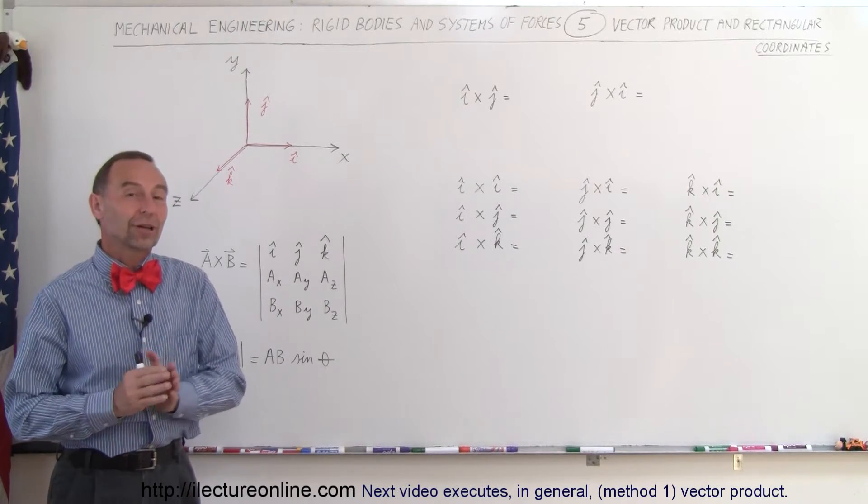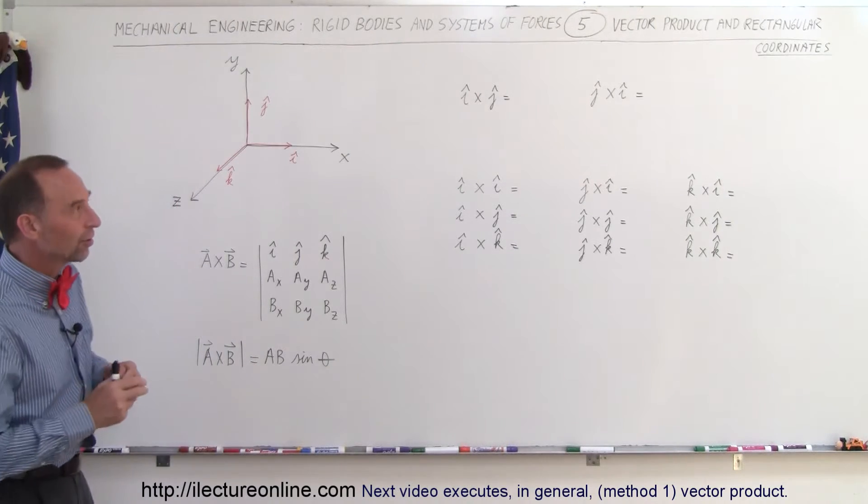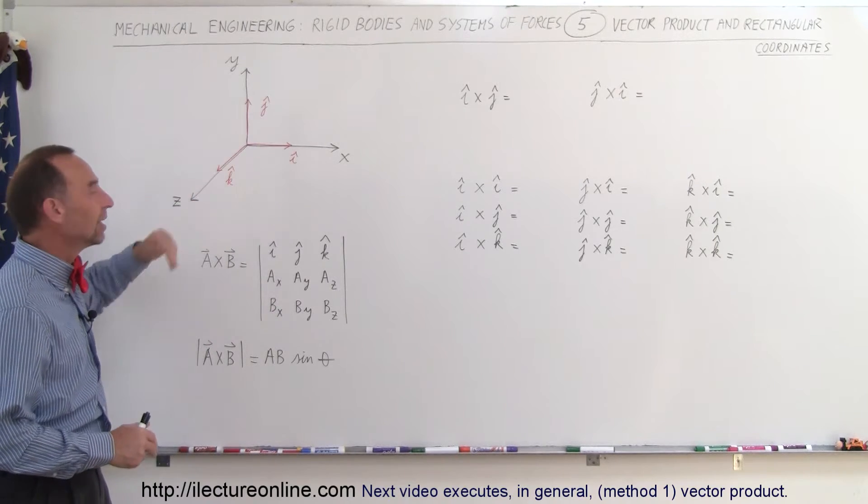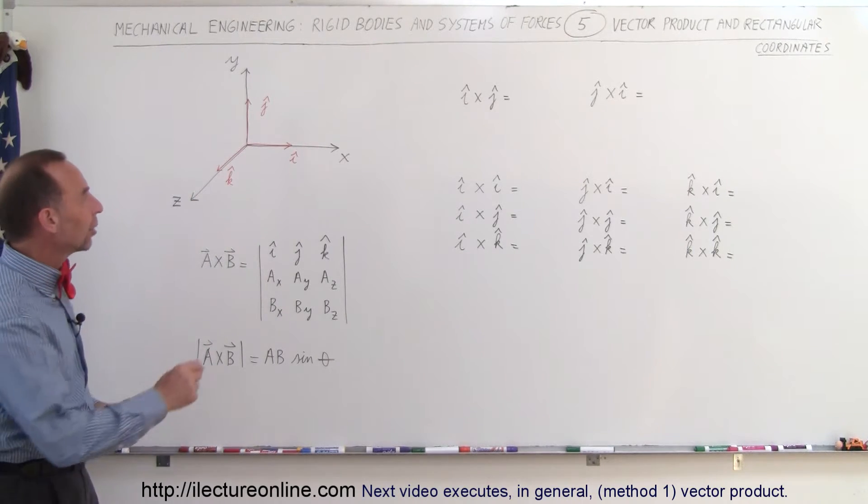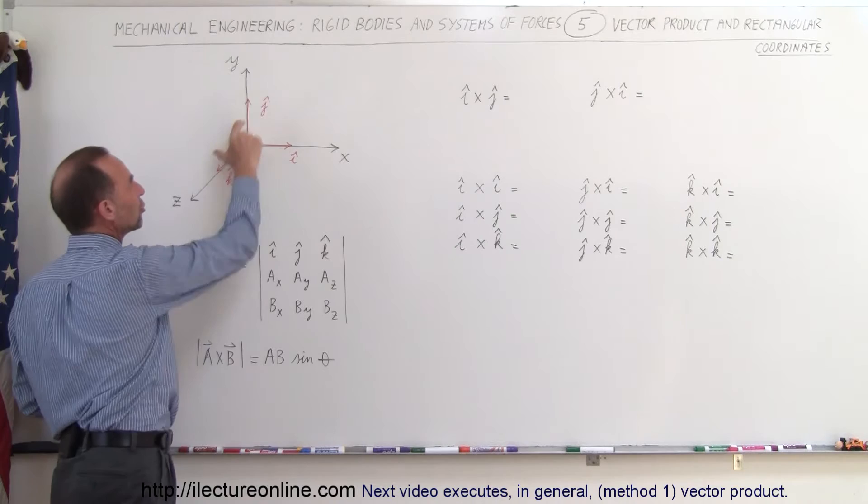Welcome to ElectronLine and now let's take a look at vector products in the coordinate system. So we have the XYZ rectangular coordinate system and on each of the axes we have what we call the unit vector.